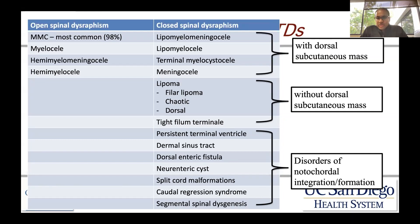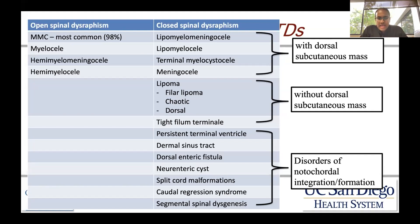Without a dorsal subcutaneous mass, you can have what's called a lipoma, which is different than a lipomyelomeningocele, although they probably occur along a continuum. Among lipomas, there's a lipoma of the filum terminale, a chaotic lipoma which is interspersed with the nerves, and a dorsal lipoma. There's also a tight filum terminale.